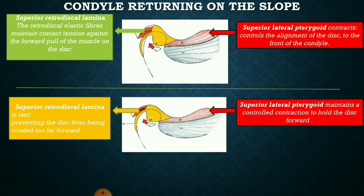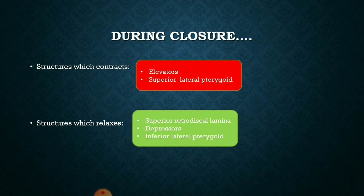The superior retrodiscal lamina remains slightly taut to prevent the disc from rotating too far forward. Both structures work in balance: the superior retrodiscal lamina prevents excessive anterior displacement of the articular disc, while the superior lateral pterygoid prevents excessive posterior pull of the disc by the lamina. In summary, during closure the structures that contract are the elevators and superior lateral pterygoid, while the structures that relax are the superior retrodiscal lamina, depressors, and inferior lateral pterygoid.